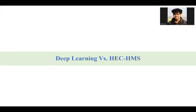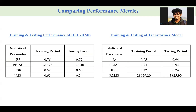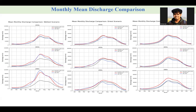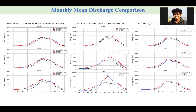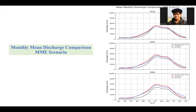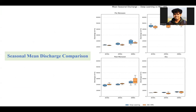A HEC-HMS model was developed for the same timeframe and scenarios, and now a comparison is conducted between results from deep learning and HEC-HMS. The two tables show performance metrics for the deep learning and HEC-HMS models. The transformer model shows much stronger performance in R-squared, PBIAS, and RSR values than the HEC-HMS model. The monthly mean discharge comparison from transformer and HEC-HMS shows that hydrograph shape and flow magnitude are very similar. In all scenarios, the hydrological model slightly under-predicts the discharge. The multi-model ensemble hydrograph also shows almost the same trend. Both results agree on almost the same seasonal discharge magnitude.